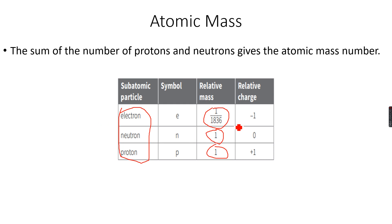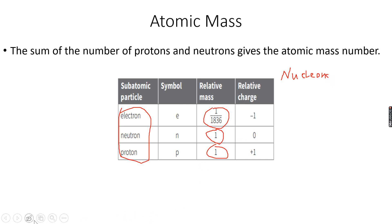When taking relative atomic mass, we only add the number of protons and neutrons. This is also called the nucleon number, because protons and neutrons are called nucleons — they are found in the nucleus. So the relative atomic mass is also called the nucleon number.